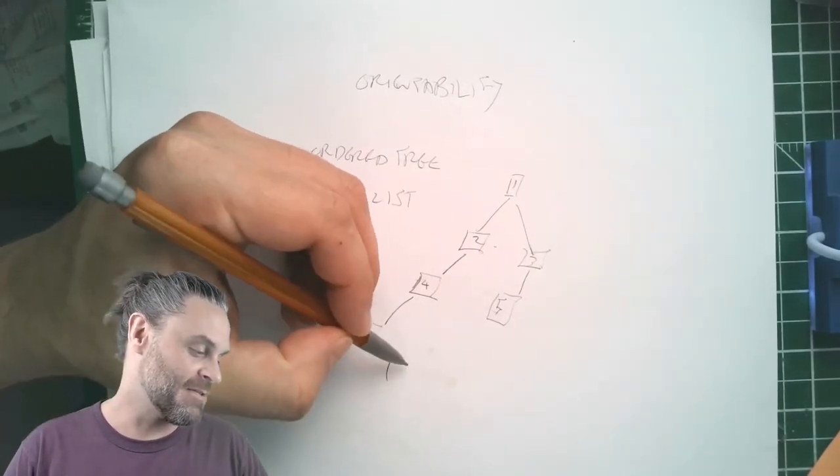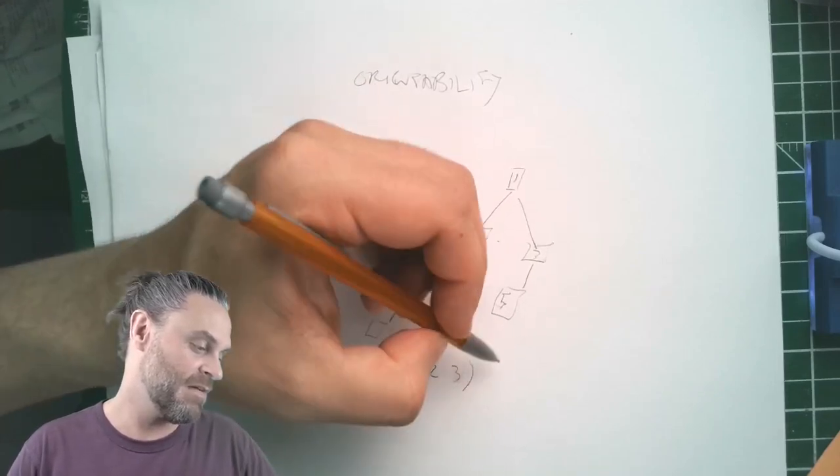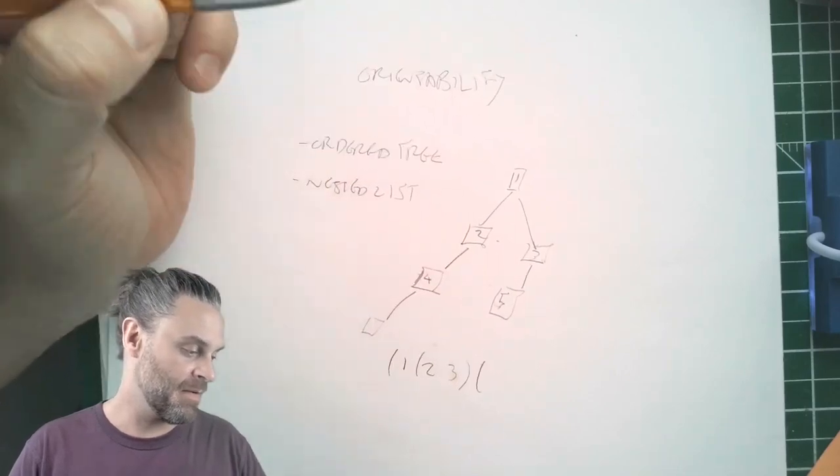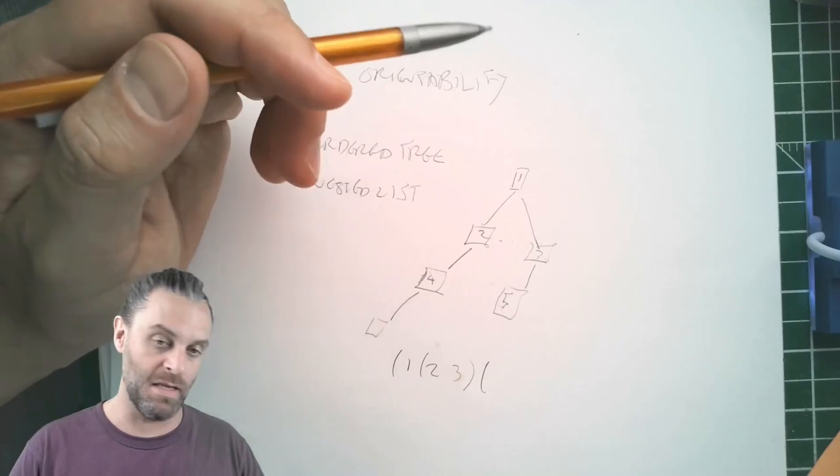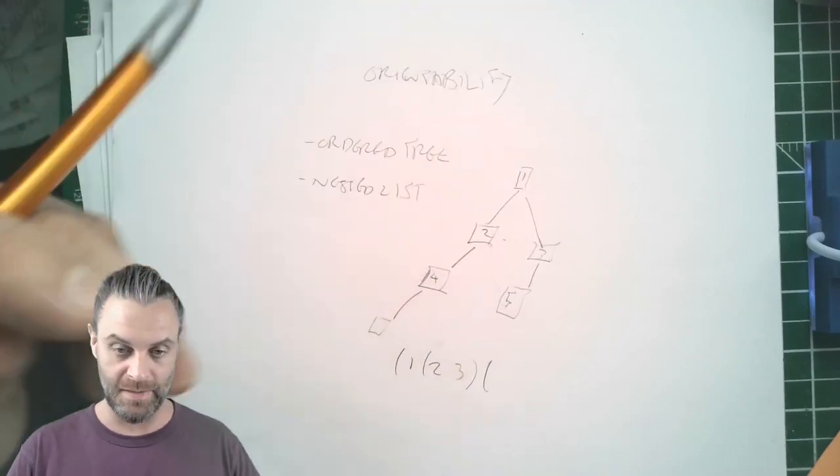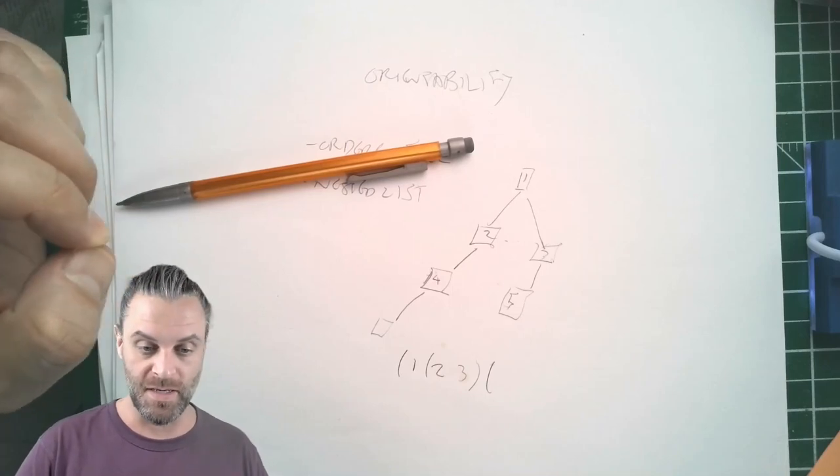Or a nested list is sort of like one, two, three, whatever. And when the structure is flattened, it gets flattened into a sequence, and that's sort of what serialization is.